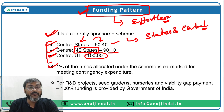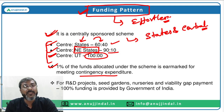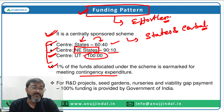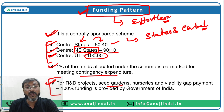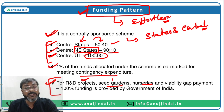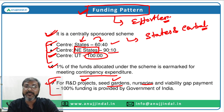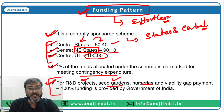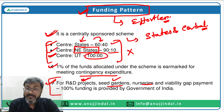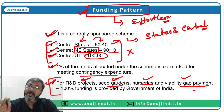Additionally, 1% of the total funds allocated under the scheme is for meeting contingency expenditure like administrative expenses. There is also an exception: for R&D projects, seed gardens, nurseries, and viability gap payment, 100% funding will be provided by the central government only — the normal sharing pattern does not apply in these four areas. We will cover viability gap payment in more detail ahead.